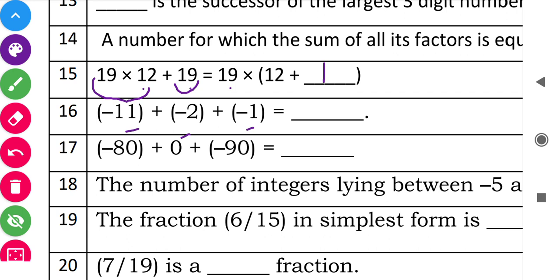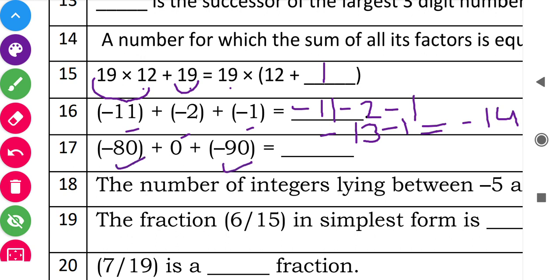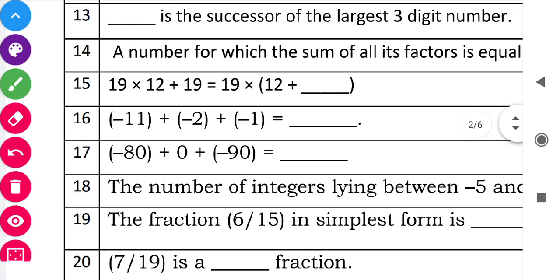Next: minus 11 plus minus 2 plus minus 1. Since minus and minus gives plus, and then plus and minus gives minus, you add all: minus 11 minus 2 gives minus 13, minus 1 gives minus 14. Next: minus 80 minus minus 90. Minus minus is plus, so 90 plus 80 equals 170, and the sign is negative, so the answer is negative 170.